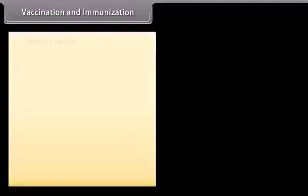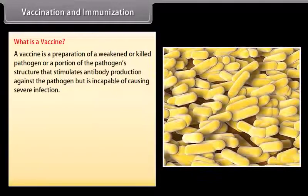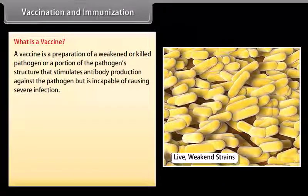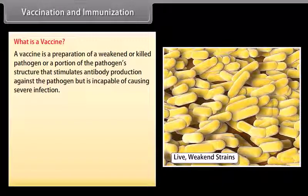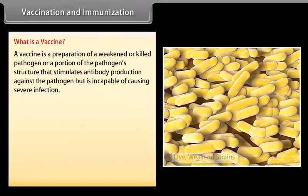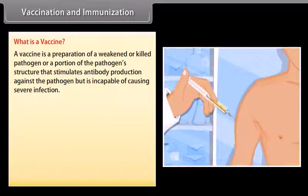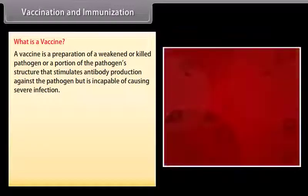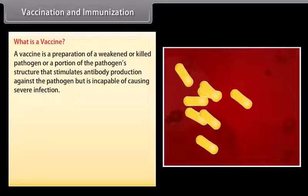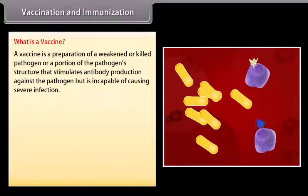What is a vaccine? A vaccine is a preparation of a weakened or killed pathogen, or a portion of the pathogen's structure, that stimulates antibody production against the pathogen but is incapable of causing severe infection.